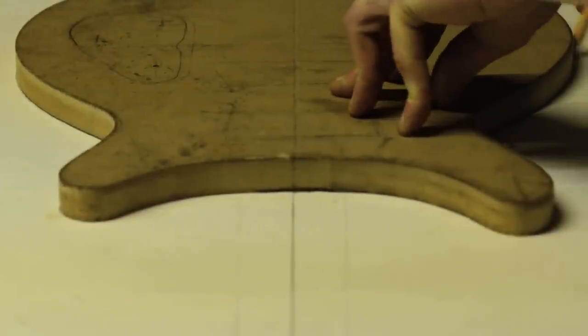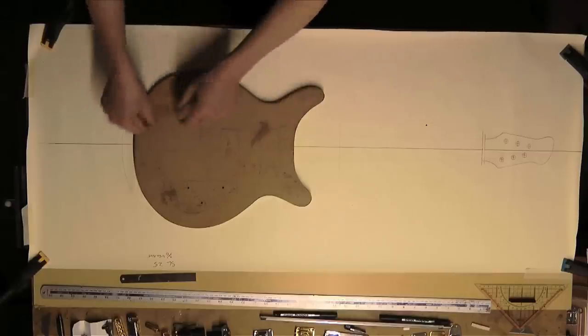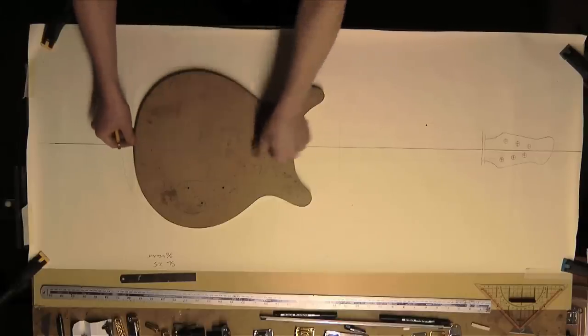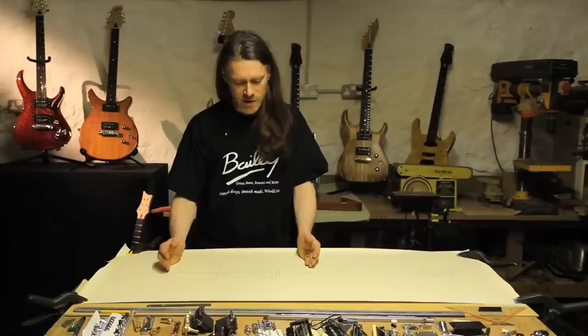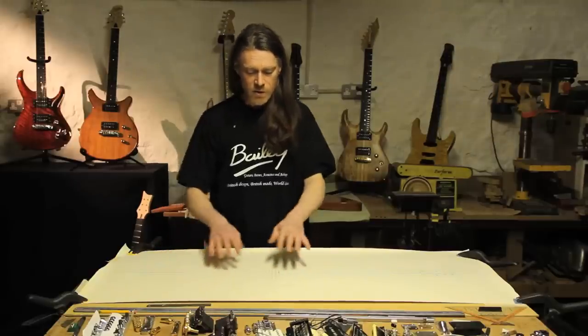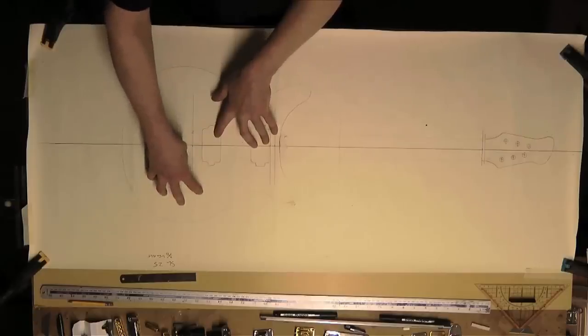One thing you could do if you were making your own shape, if you're not sure how big to make it, get another guitar, roughly draw around it and use that as a starting point. Why not? The job of the body is purely just to hold all the other parts in place.